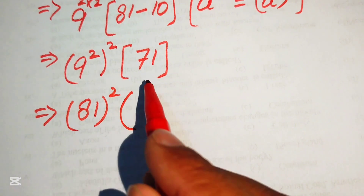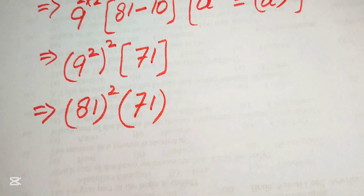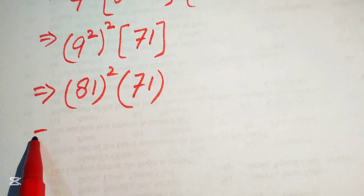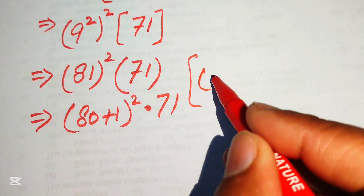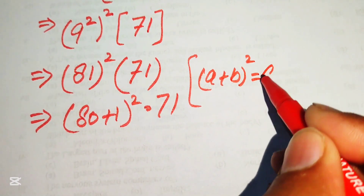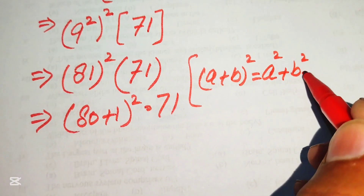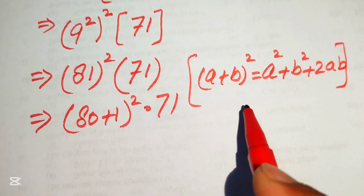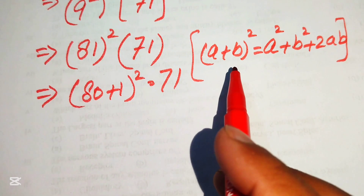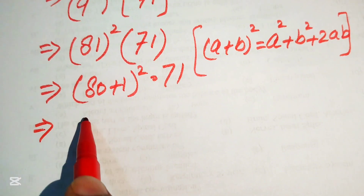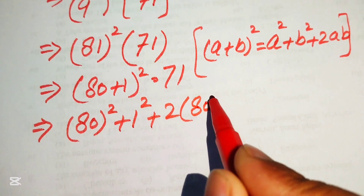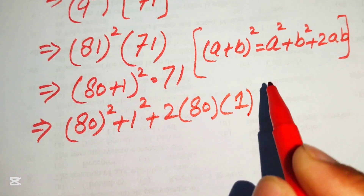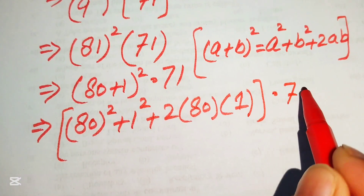So we now have (9 squared) squared, which is 81 squared, multiplied by 71. To find 81 squared without a calculator, we write 81 as 80 plus 1, giving us (80 plus 1) whole squared, multiplied by 71. We apply the algebraic formula (a plus b) squared equals a squared plus b squared plus 2ab, which gives us 80 squared plus 1 squared plus 2 times 80 times 1, all multiplied by 71.